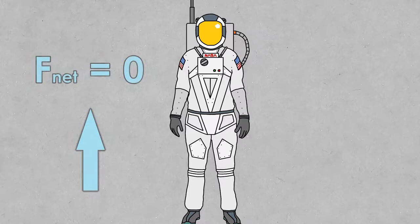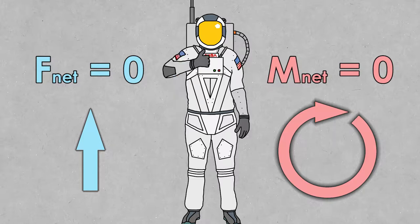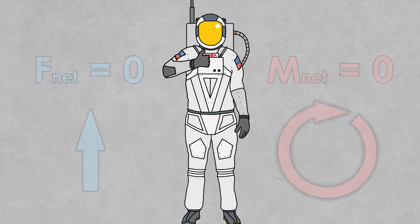So, for an object to be in static equilibrium, the net moment must also be zero to keep the object from accelerating. This fact is actually very useful, and to explain why, let's go back to that bridge.